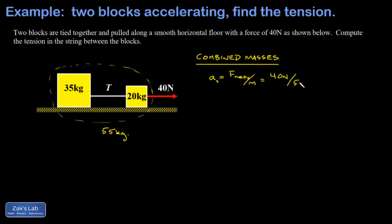I get an acceleration given by 40 newtons over the total mass of 55 kilograms, which to three sig figs is 0.727 meters per second squared.